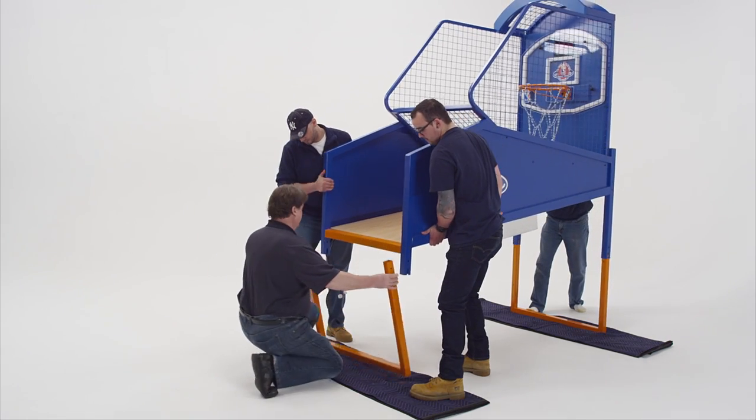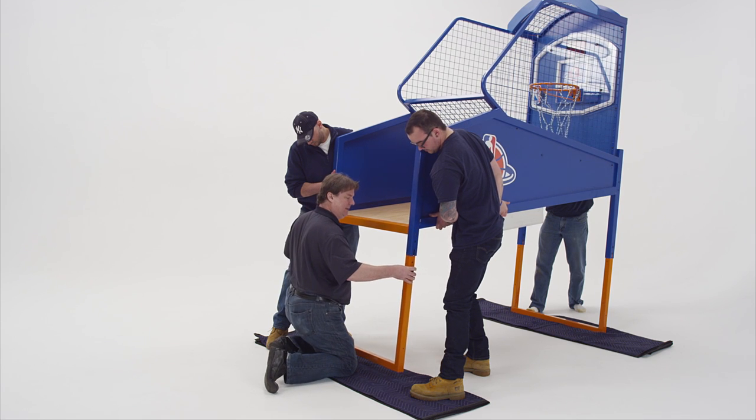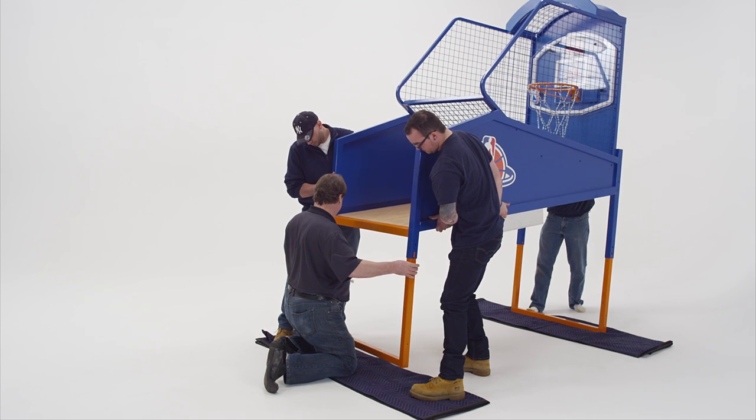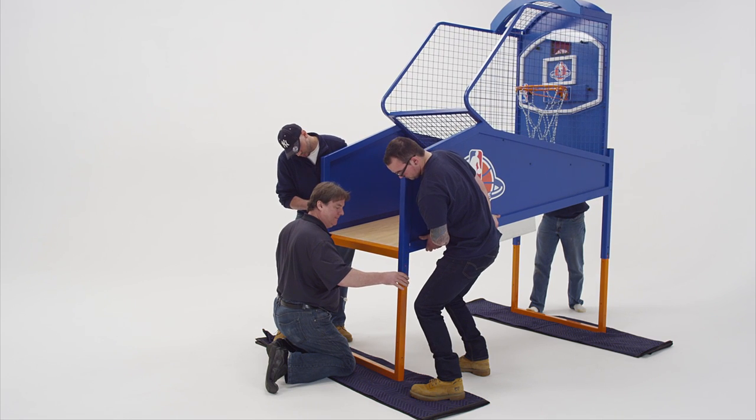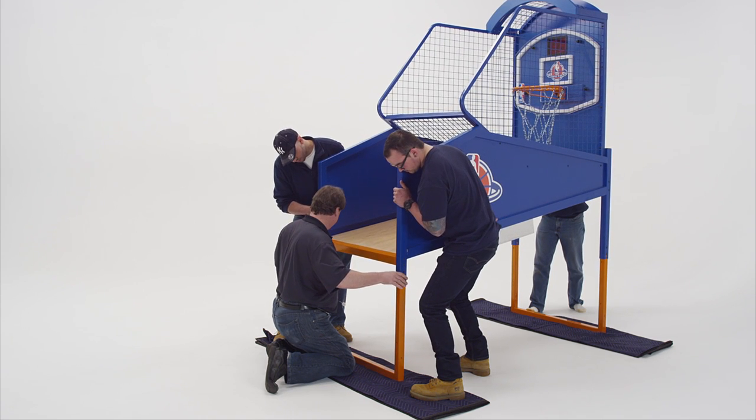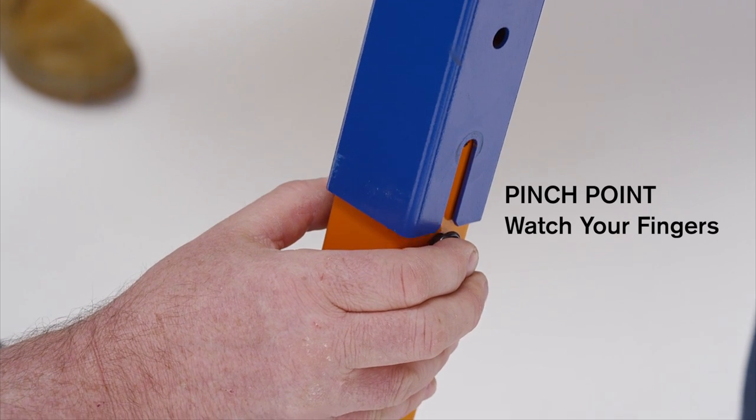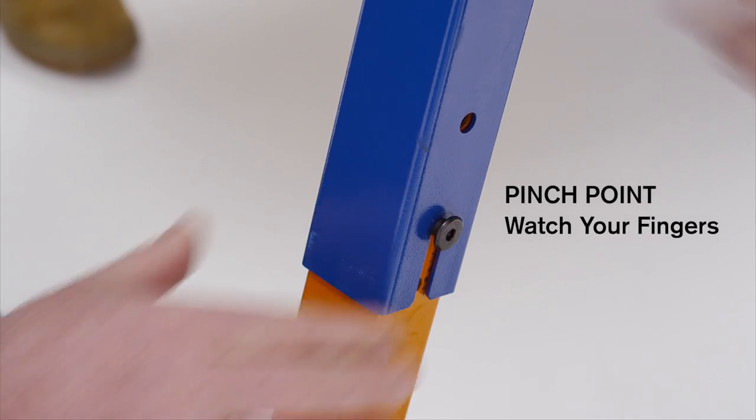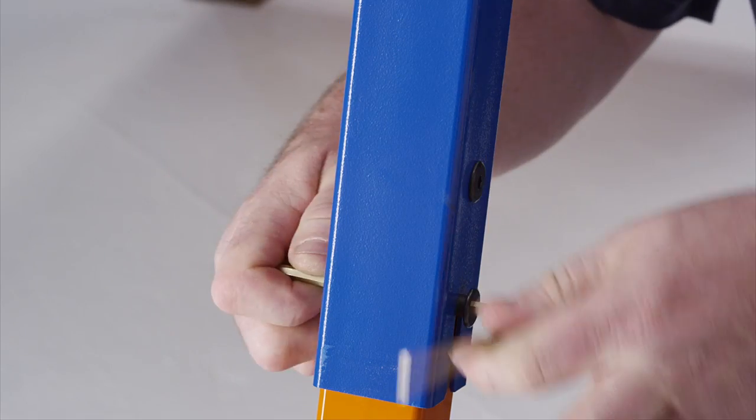At the front of the cabinet, with a person on each side, lift the cabinet up. Have a third person slip the front legs into the cabinet. Just like the back legs, the hat assembly will stop the legs at the correct spot. Be careful not to pinch your fingers. Repeat the process to secure the legs to the cabinet as you did for the back legs.